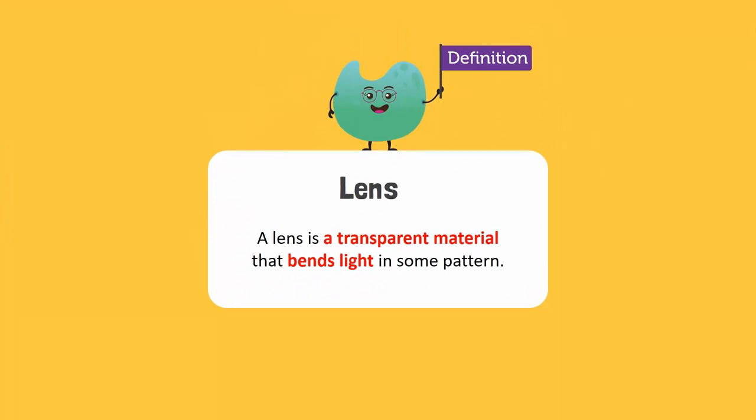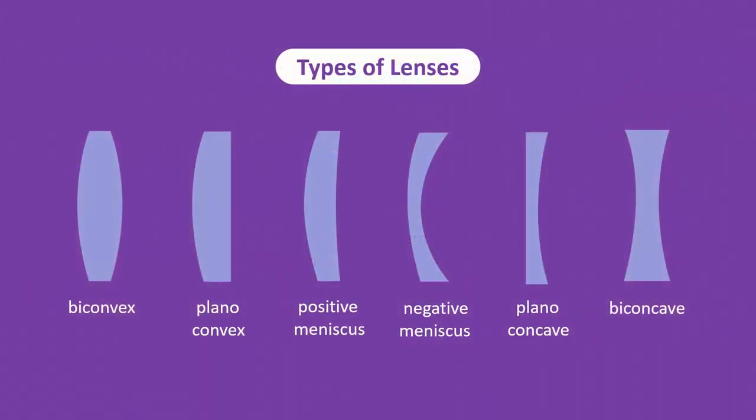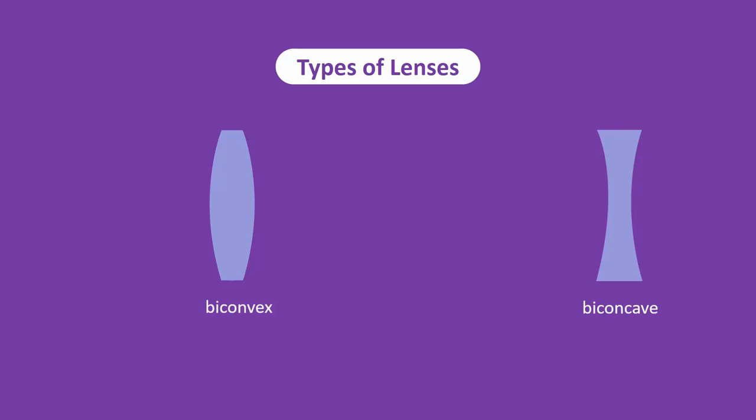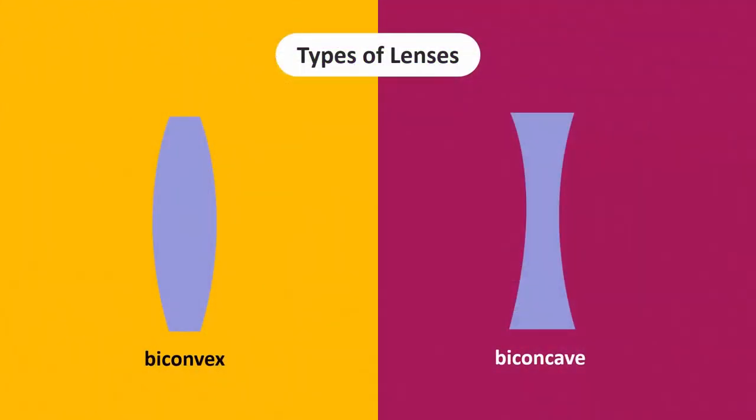These are some common lenses, and this is what they look like. The two specific lenses that we are going to cover in this video are biconvex and biconcave lenses. Each one consists of two spherical surfaces. Hence, the word bi is used as it means two.